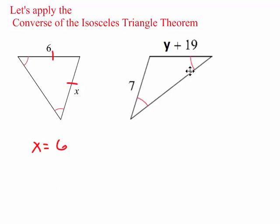If this base angle is congruent to that base angle, fall across, then 7 is congruent to y plus 9. So I already wrote out the math for you. So you set up y plus 9 is equal to 7. Subtract the 9 from both sides. You get y is negative 2.